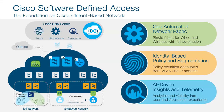Software-defined access has three basic principles. First, one automated fabric for wireless and wired network — we should have the exact same policy for both wireless and wired users, eliminating the complexity of an additional management layer for wireless users. Second, identity-based policy and segmentation, which is mainly the role of ISE. Third, assurance by analyzing the network telemetry and ensuring fabric health.